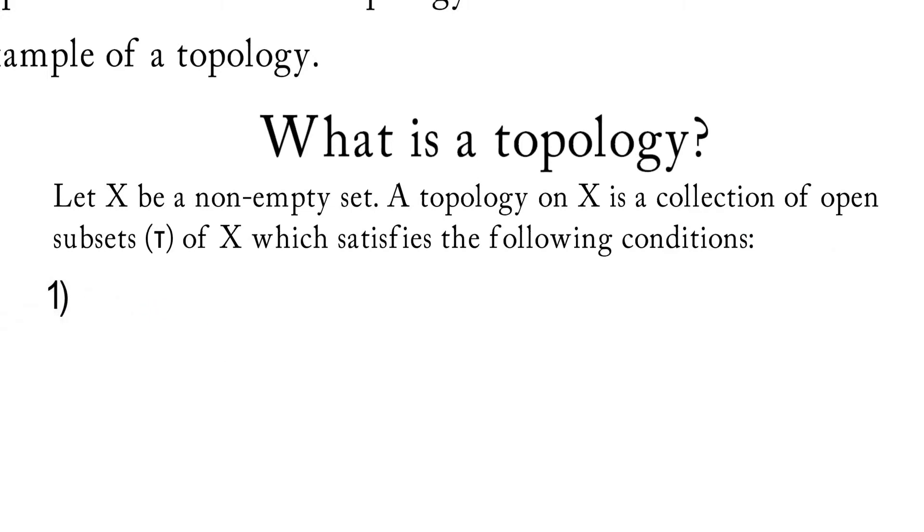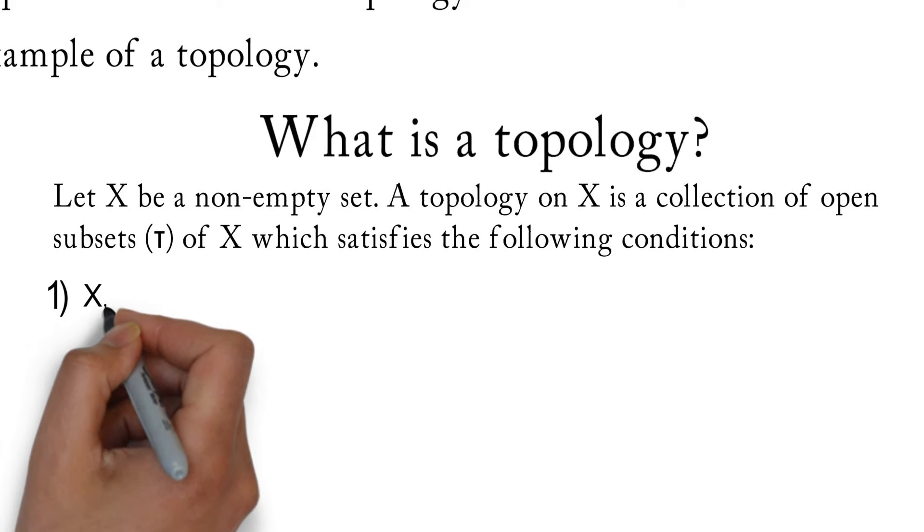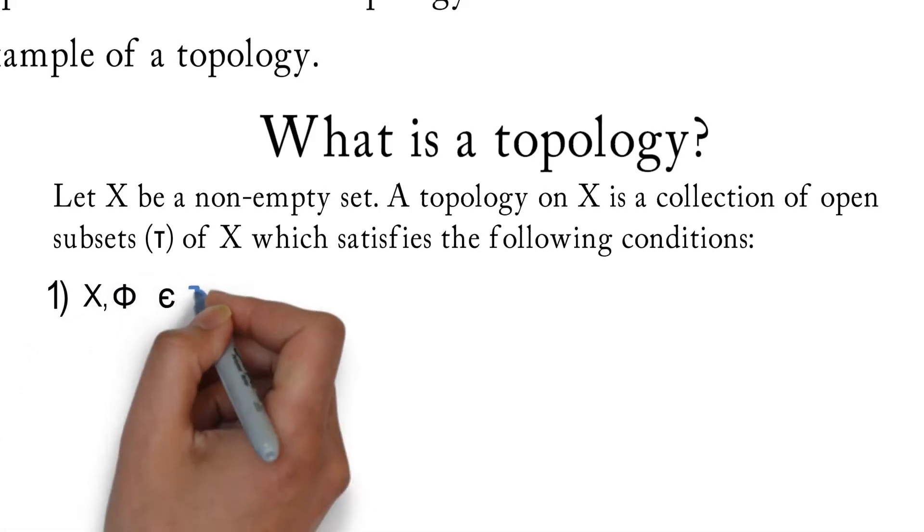There are three conditions. Condition 1: The entire set X and the empty set are elements of tau.